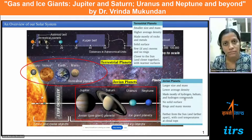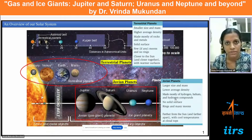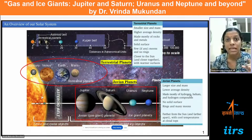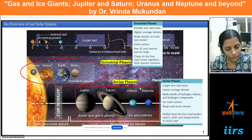By hydrogen compounds, I mean molecules which contain hydrogen as an element — for example, methane (CH₄), ammonia (NH₃), and water (H₂O). Since the Jovian planets are composed of these lighter gases, their densities are lesser compared to the terrestrial planets, which are composed of heavy rocks and metals and therefore have a higher density.